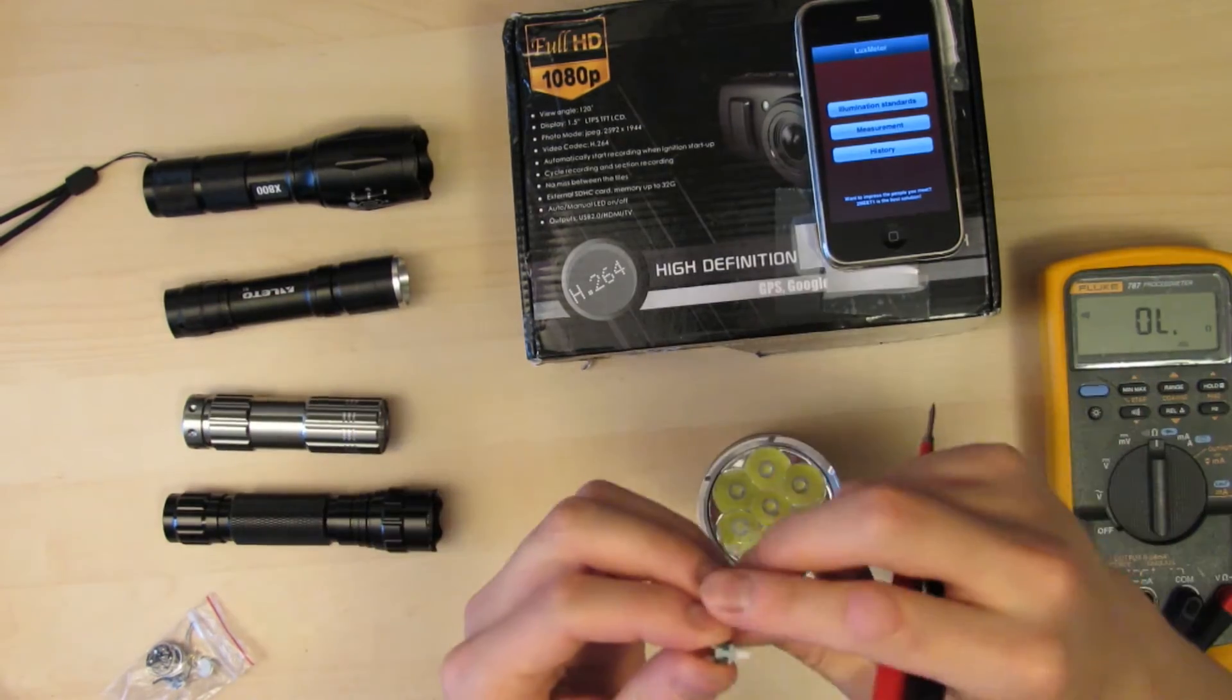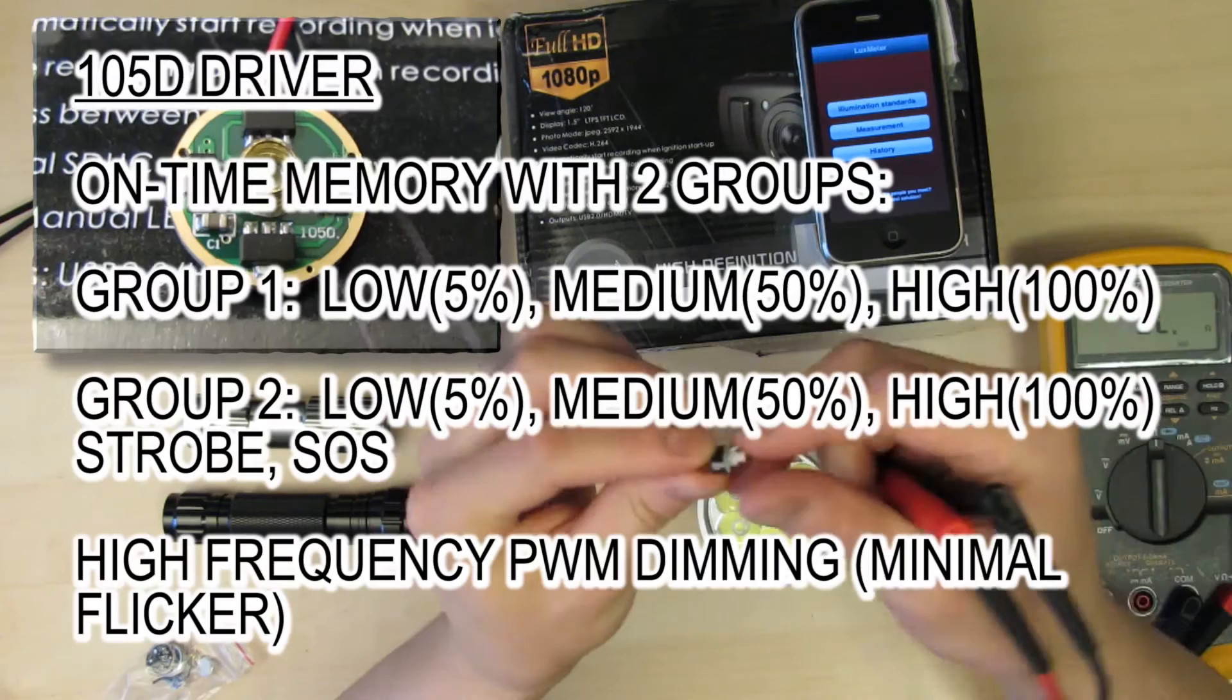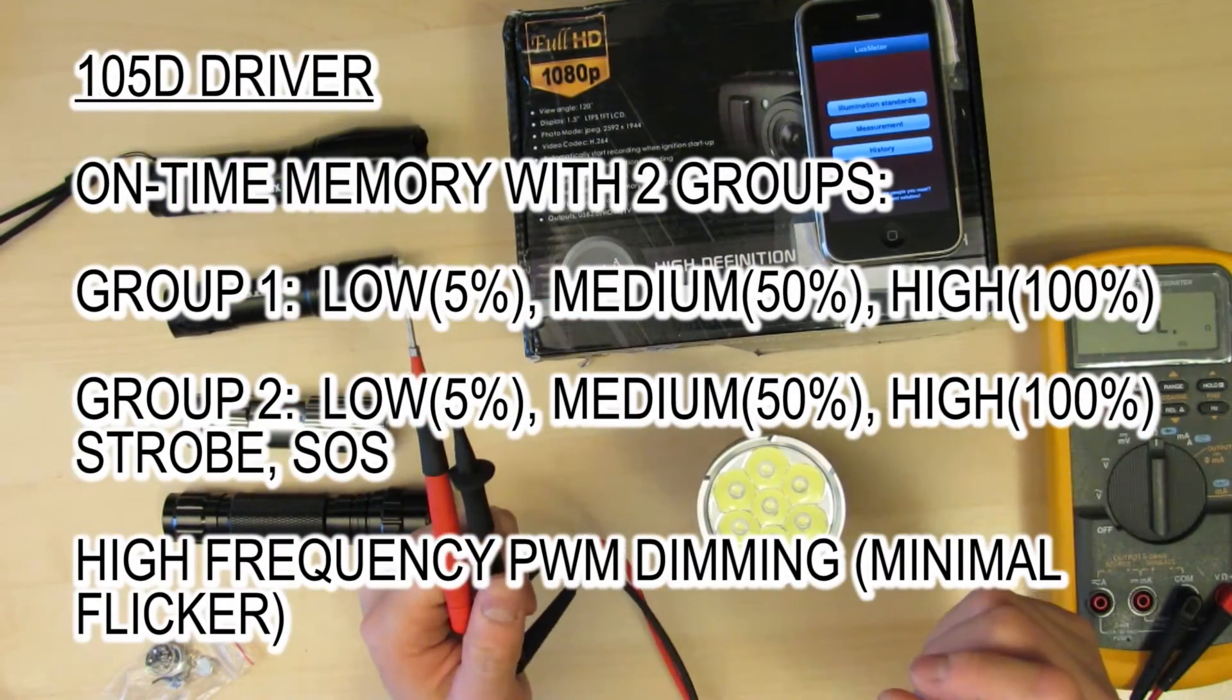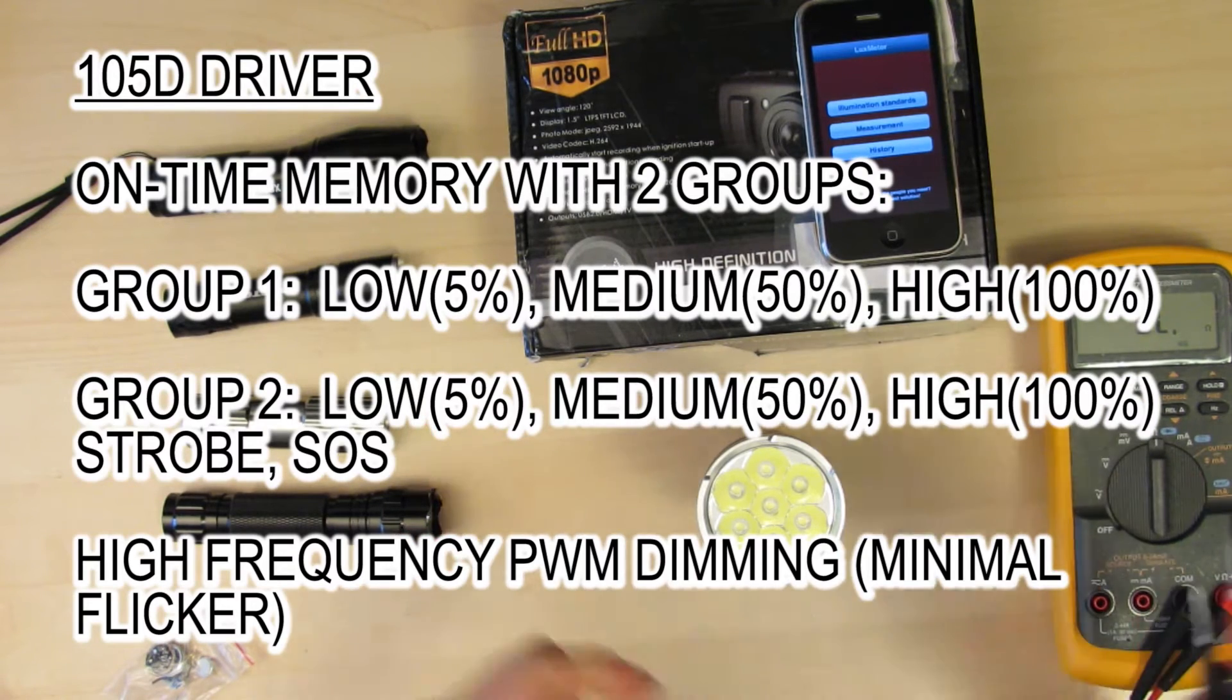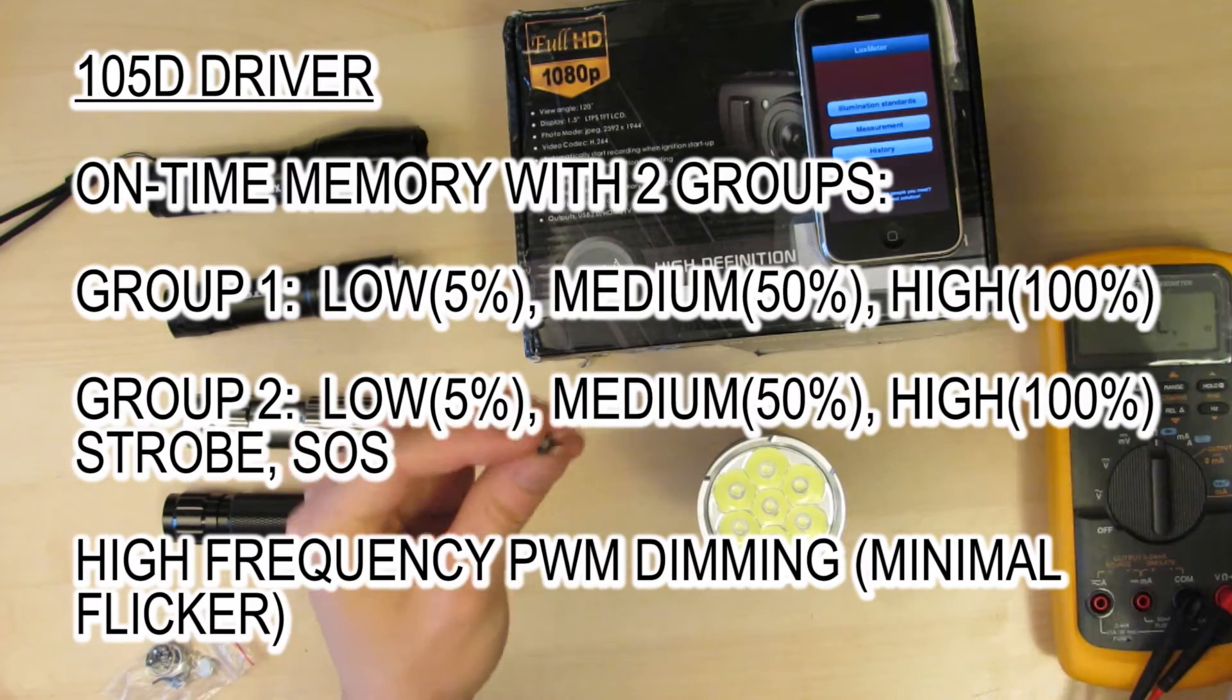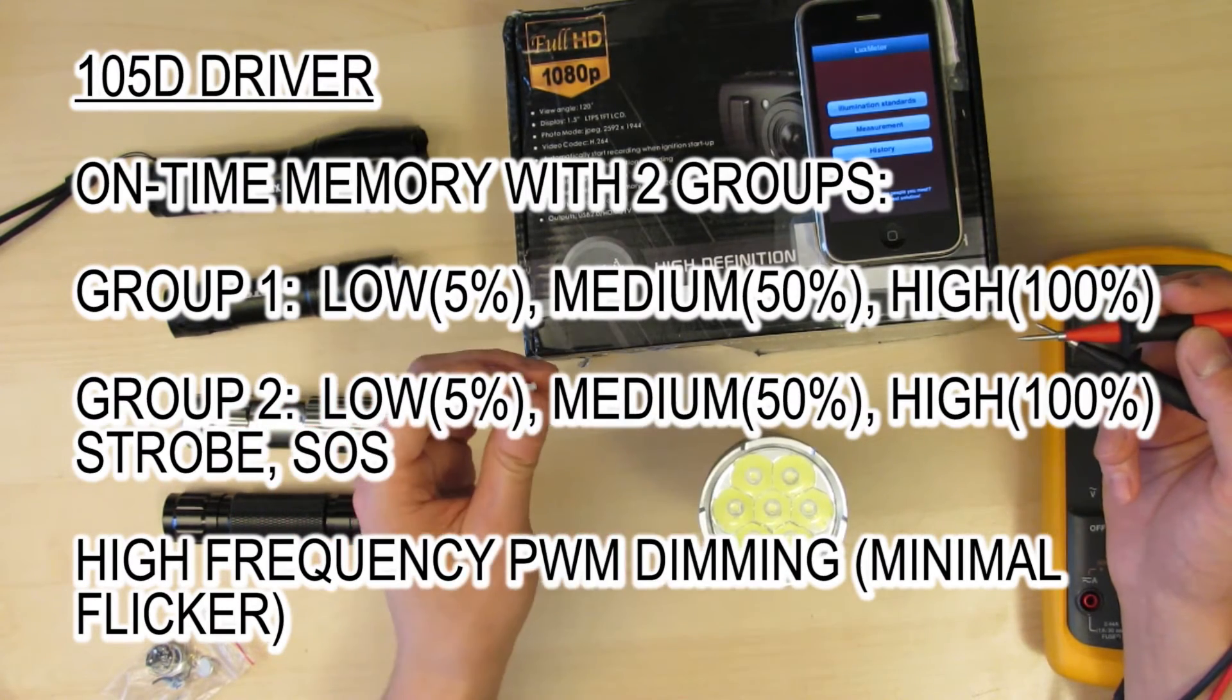By adding in the 105D driver and the latching switch, you can get some memory mode. So you can turn on high when you want high or get to low when you want low. You can go to a group with SOS and strobe if you want to, but if you don't use those modes usually, you can just leave it on high, medium and low.